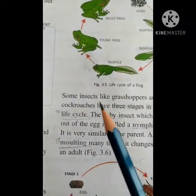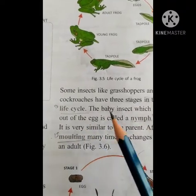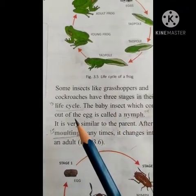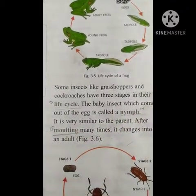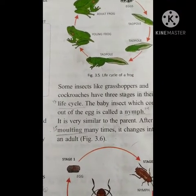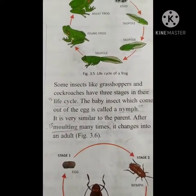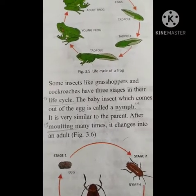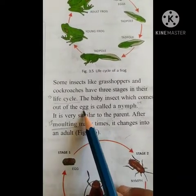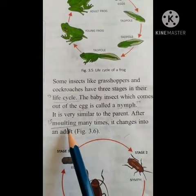Some insects like grasshoppers and cockroaches have 3 stages in their life cycle. So grasshoppers and cockroaches are insects and they have 3 stages in their life cycle. What are those? First is egg, then nymph, and then the adult.